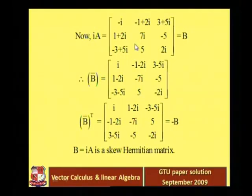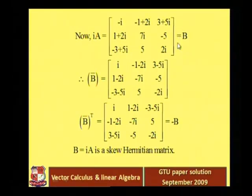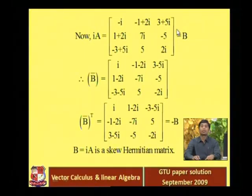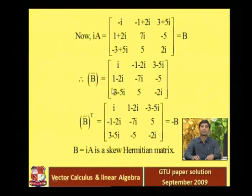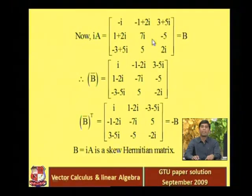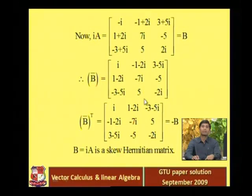We call this B and want to prove B-star = minus B. First, find the conjugate of B: i → minus i; minus 1 + 2i → minus 1 minus 2i; 3 + 5i → 3 minus 5i; 1 + 2i → 1 minus 2i; 7i → minus 7i; minus 5 stays minus 5; minus 3 + 5i → minus 3 minus 5i; 5 stays 5; 2i → minus 2i.